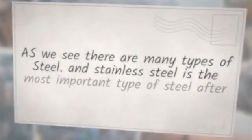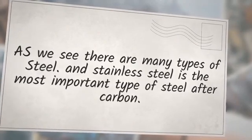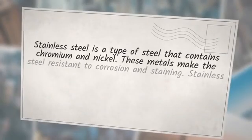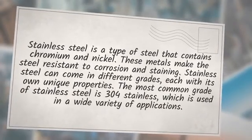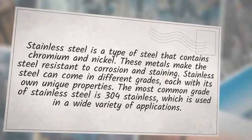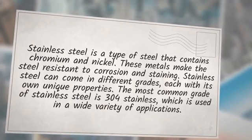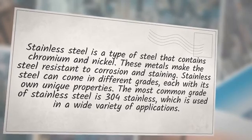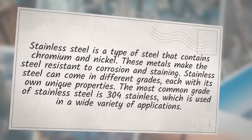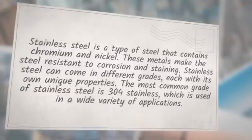There are many types of steel, and stainless steel is the most important type after carbon steel. Stainless steel is a type of steel that contains chromium and nickel. These metals make the steel resistant to corrosion and staining. Stainless steel can come in different grades, each with its own unique properties. The most common grade of stainless steel is 304 stainless, which is used in a wide variety of applications.